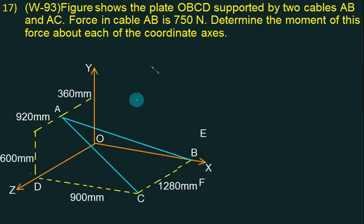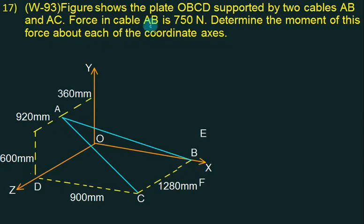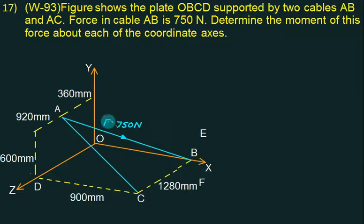In this question we have a plate O, B, C, D. This is a horizontal plate supported by two cables: cable AB and cable AC. The force in cable AB is 750 N. Let's call this force F.